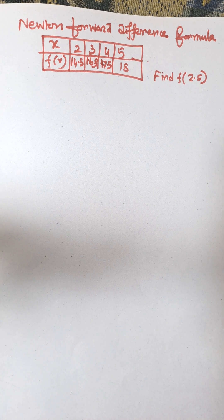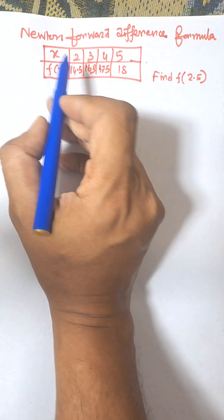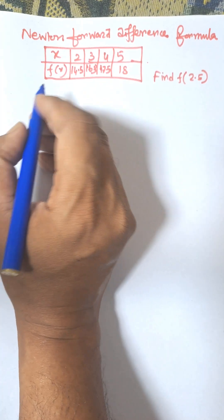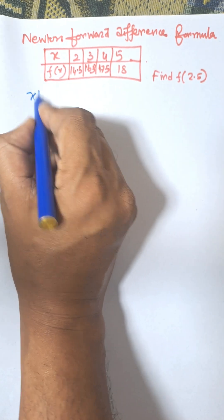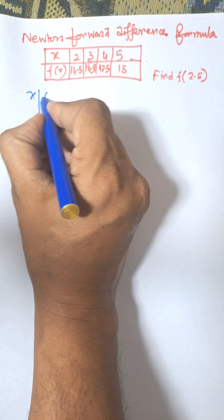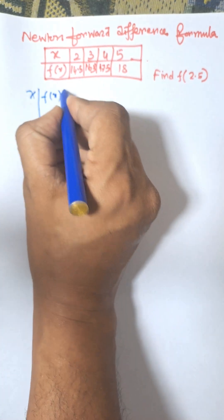In this video, I am going to discuss Newton's Forward Difference Formula for the following table. First of all, we need to find the difference table, that is the x values and corresponding f(x) values.